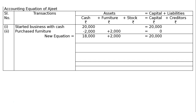The third transaction: he paid rent Rs. 200. Rent is an expenditure, and expenditure reduces both cash and capital. So minus 200 from cash and minus 200 from capital. Then write the new equation.